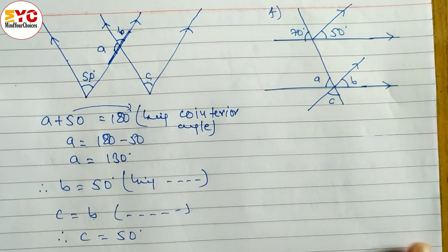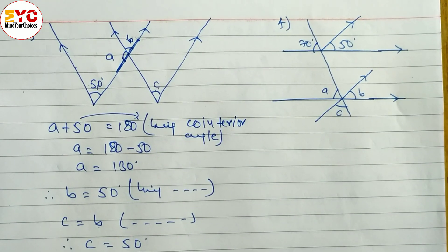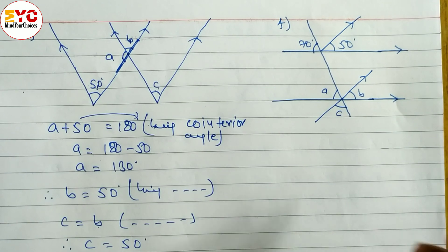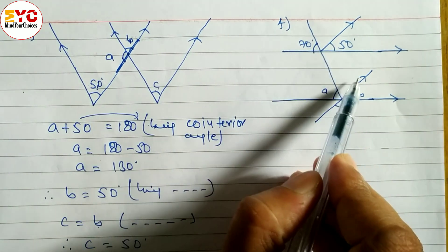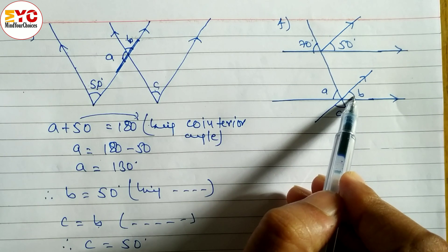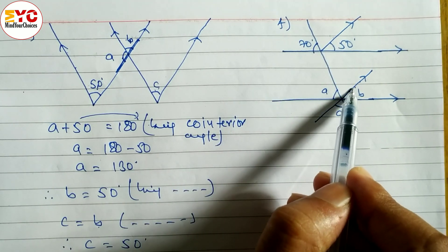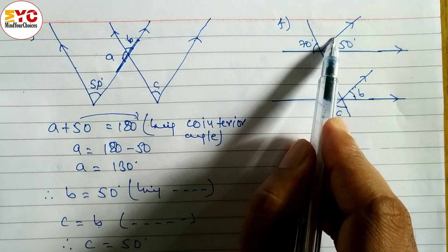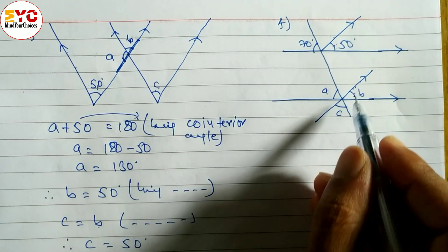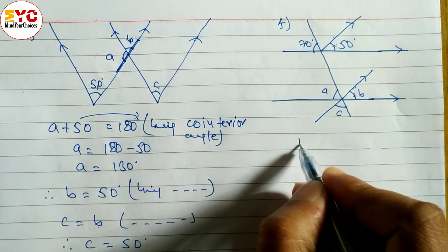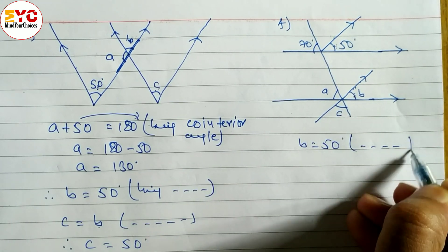Now look at the next discussion here — how to find out the value of a, b, c. You can see here these two lines are parallel. What is the relation of b and 50? These two lines are parallel — one angle is outside of this parallel line and one angle is inside — means they are corresponding angles. So we can write b is equal to 50. b is equal to 50 degrees. Being corresponding angle.